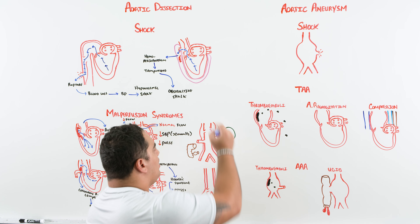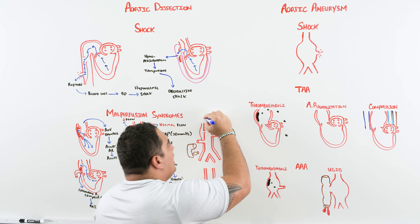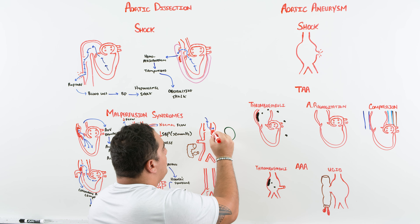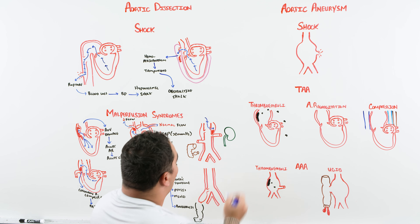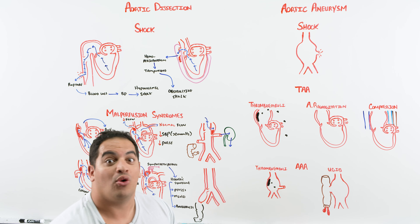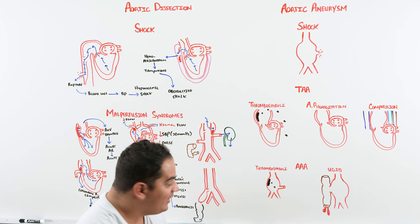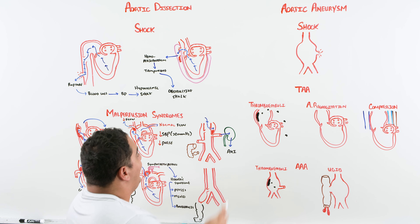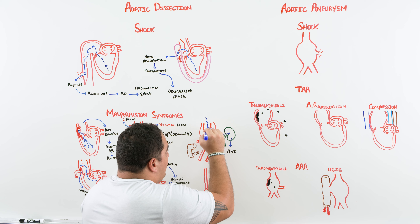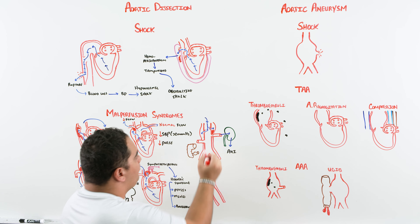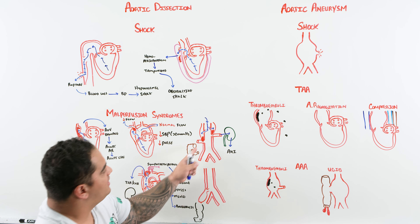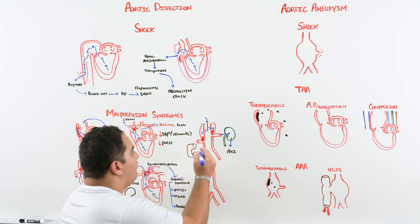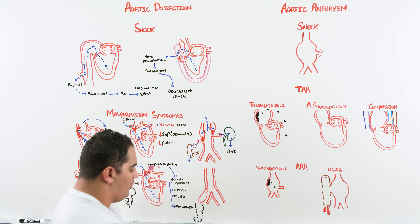Now into descending aortic dissection. Blood past the aortic arch dissects downward, and the false lumen compresses the renal artery. Reduced renal perfusion leads to acute kidney injury — you'll see an increase in creatinine and decreased urine output. Further down, if the dissection compresses the inferior or superior mesenteric artery supplying the bowel, you get reduced bowel perfusion leading to bowel ischemia — specifically acute mesenteric ischemia.